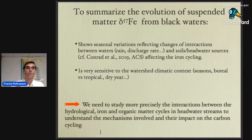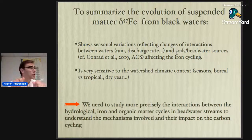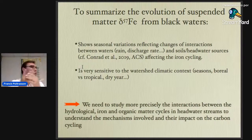To summarize the evolution of suspended matter iron isotope signatures from black waters: they show seasonal variations reflecting changes in the interaction between water and soil, linked to rain and discharge rate, and probably soil headwater sources. This is confirmed by the Conrad et al. study in the Kalix boreal river. The signatures are very sensitive to watershed climatic conditions — sensitive to season, to boreal versus tropical conditions, and apparently very sensitive to extremely dry years, though we need more work to confirm that.